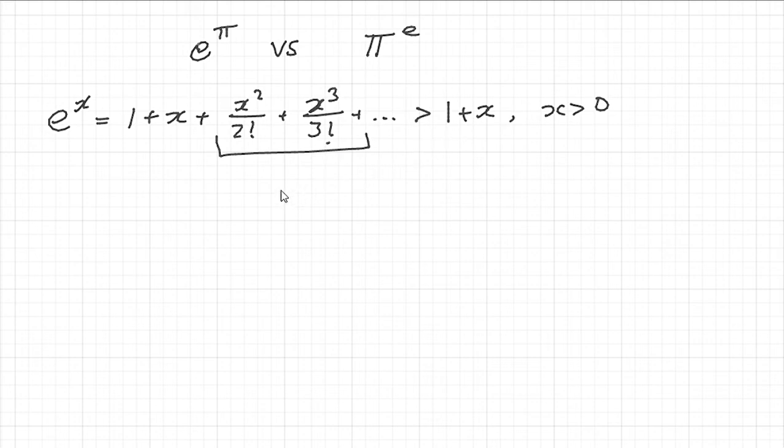So we get e to the x is bigger than 1 plus x whenever x is positive. Now all I'm going to do is set x to be equal to pi over e minus 1. Now this thing here is definitely positive because pi is definitely bigger than e. Pi is bigger than 3 and 3 is bigger than e. And so this is bigger than 1. Subtract 1 is still going to be positive.